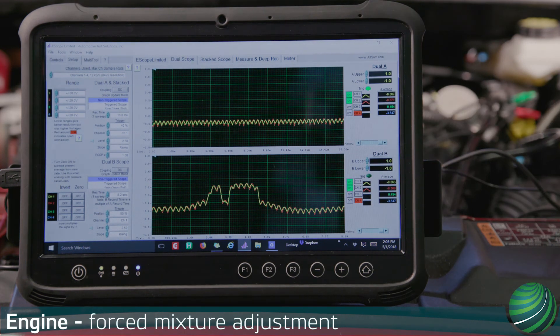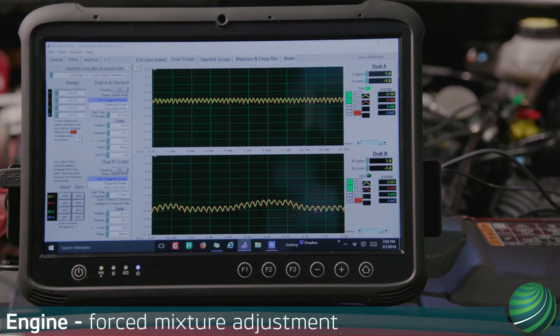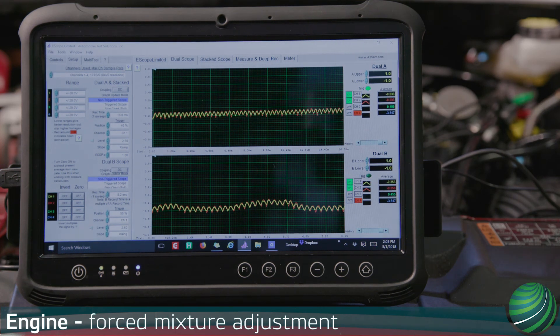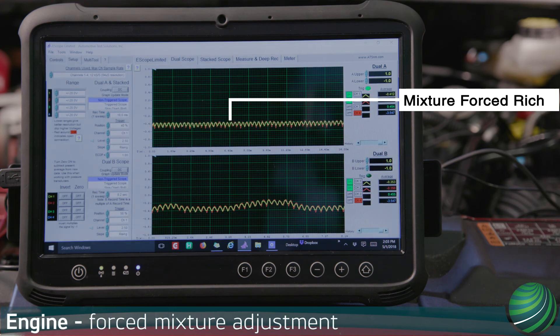Then, force the sensor rich using a propane enrichment kit. Voltage should go to minus 400 millivolts and hold during the enrichment.